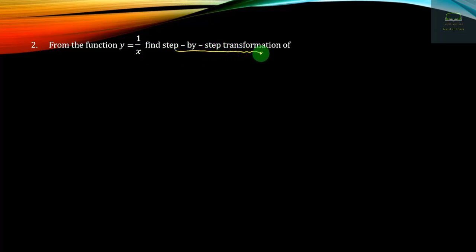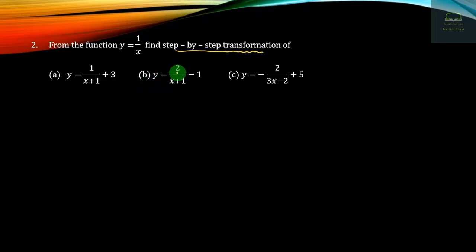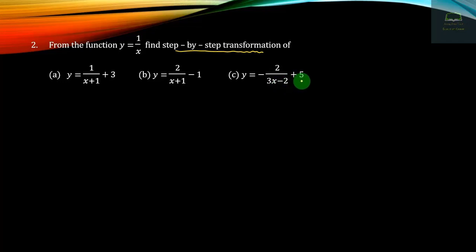The same thing is transform. Then the function is number one: y equals to 1 by x plus 1 plus 3. Number one: y equals to 2 by x plus 1 minus 1. Number one: y equals to minus 2 by 3x minus 2 plus 5.